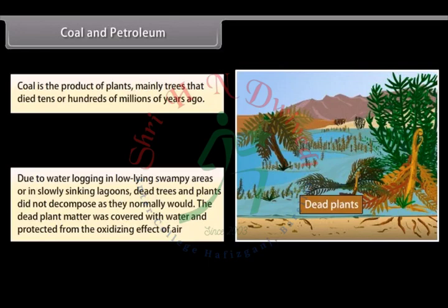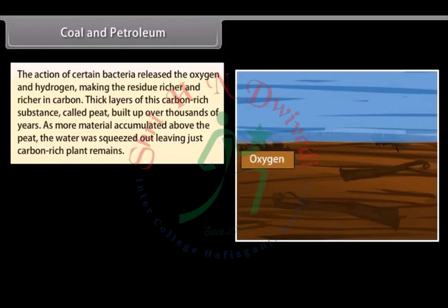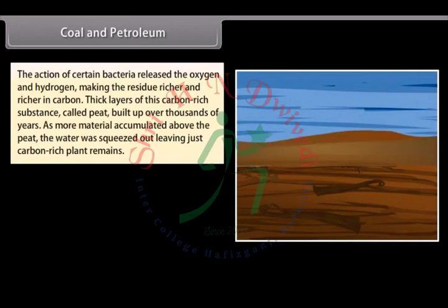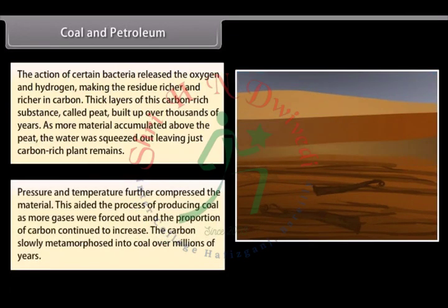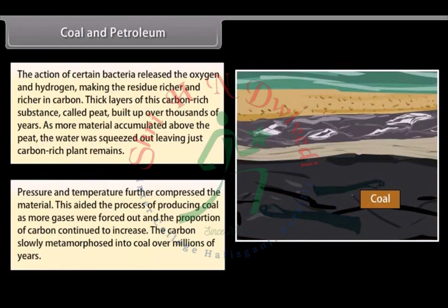Dead trees and plants did not decompose as they normally would — the dead plant matter was covered with water and protected from the oxidizing effect of air. The action of certain bacteria released the oxygen and hydrogen, making the residue richer and richer in carbon. Thick layers of this carbon-rich substance called peat built up over thousands of years. As more material accumulated above the peat, the water was squeezed out, and pressure and temperature further compressed the material, producing coal as more gases were forced out and the proportion of carbon continued to increase.